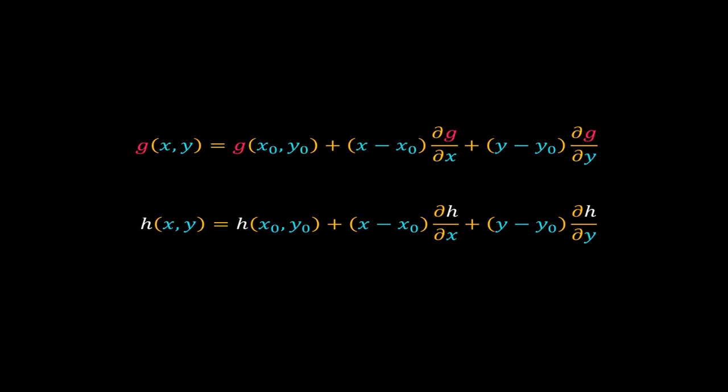As X0, Y0 is a steady state, the first terms on the right-hand side of both the equations are zero. So we can simply get rid of those.